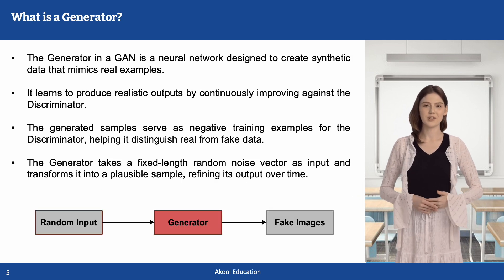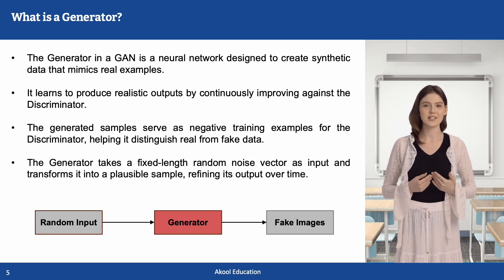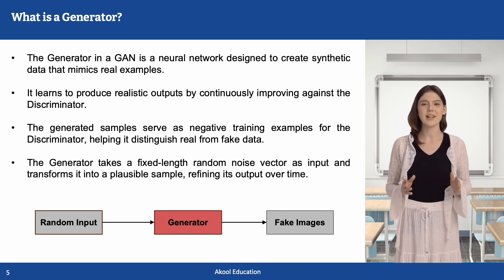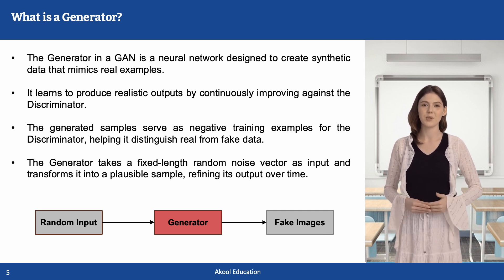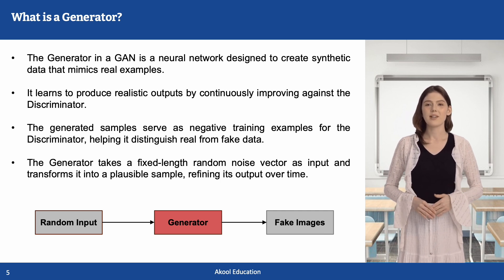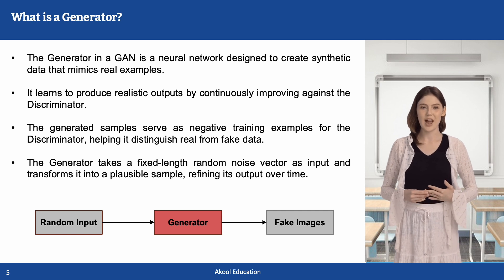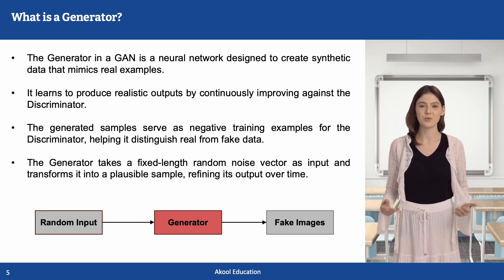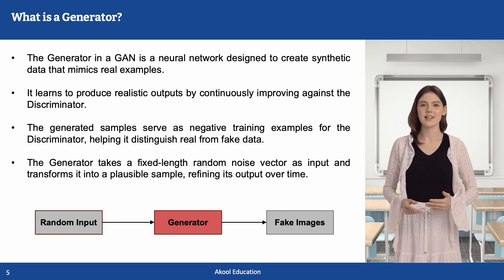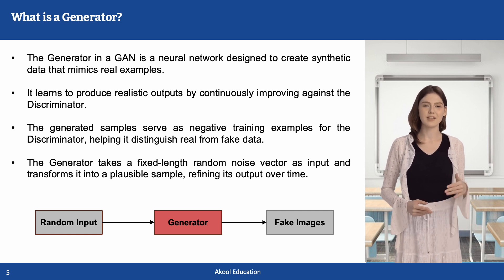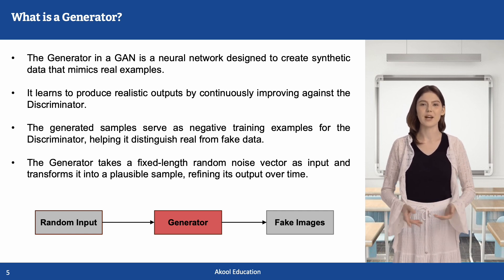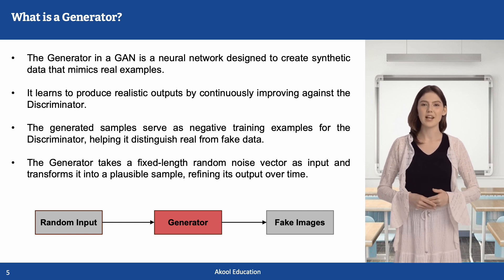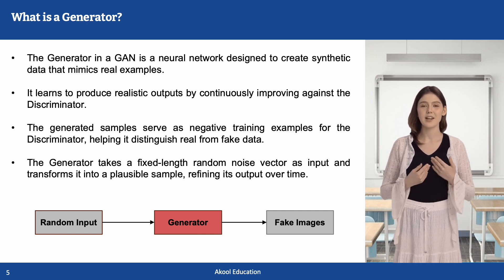Now let's look at the generator. The generator is a neural network designed to create synthetic data that looks like real data. It takes a fixed-length random noise vector as input and transforms it into a plausible sample. It learns to produce realistic output by continuously improving against the discriminator. The generated samples also serve as negative training examples for the discriminator, helping it distinguish real from fake data.